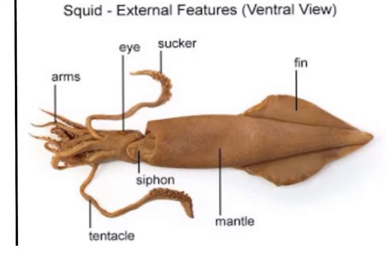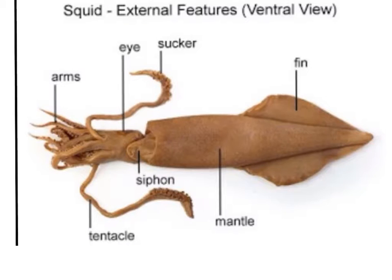The squid is classified in kingdom Animalia, phylum Mollusca, class Cephalopoda. The name cephalopod literally translates to "head-foot" due to the general appearance of the body. Cephalopods are known to be some of the most intelligent and adaptable animals of the invertebrate grouping. Some experiments have shown these animals are capable of learning and memory. Cephalopods can range in size from less than an inch to over 60 feet, as exemplified by the deep-sea giant squid.